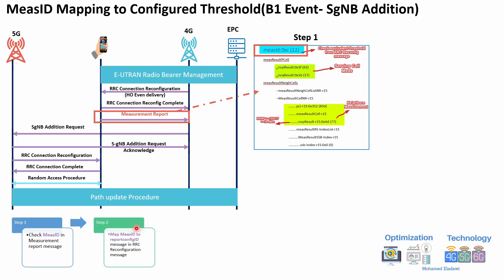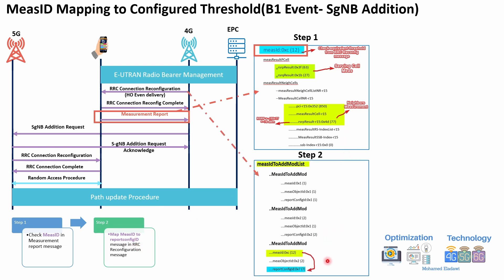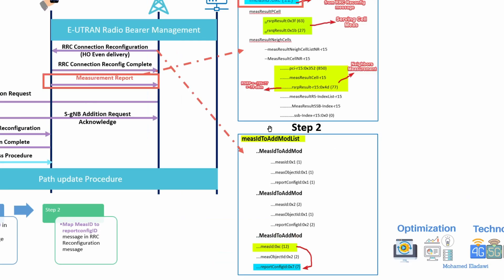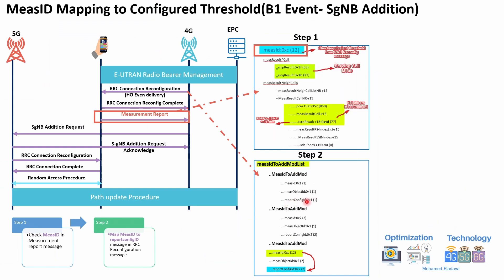The measurement report contains information about the serving cell and neighbor cells. For the second step, check the RRC configuration message to map the measurement ID to a report configuration ID — this mapping is usually at the end of the RRC configuration message. In our example, the measurement ID in the report is 12, not 1. Looking through the message, you can see many measurement IDs mapped to report configuration IDs. Measurement ID 12 is mapped to report configuration ID 7.